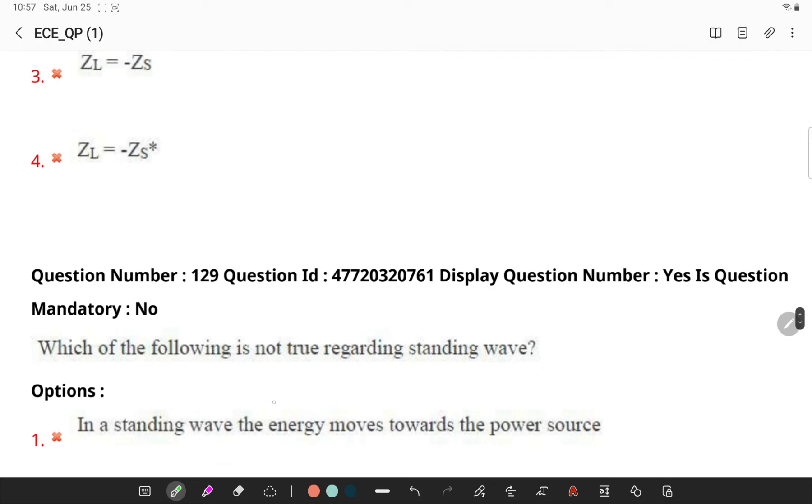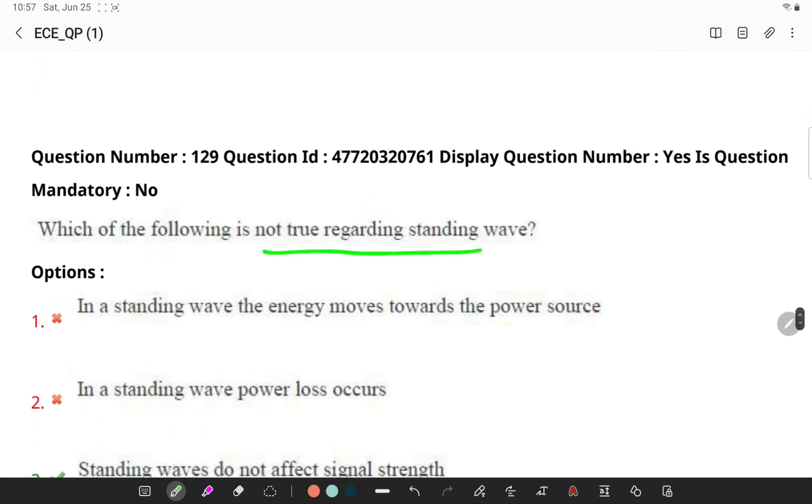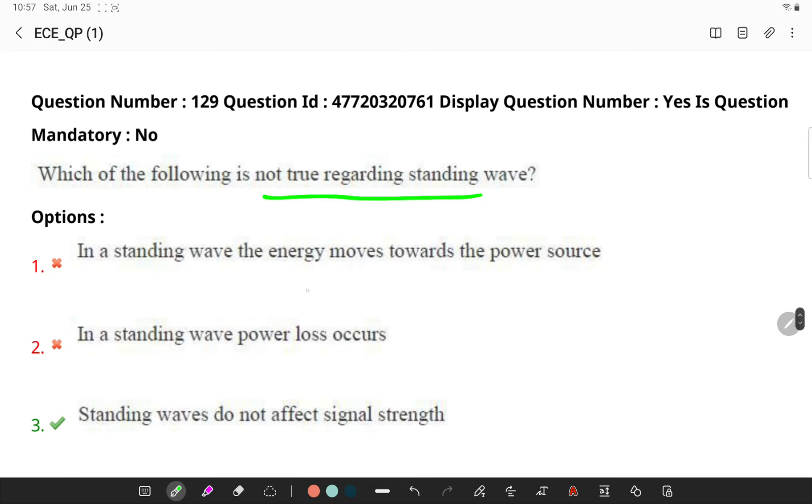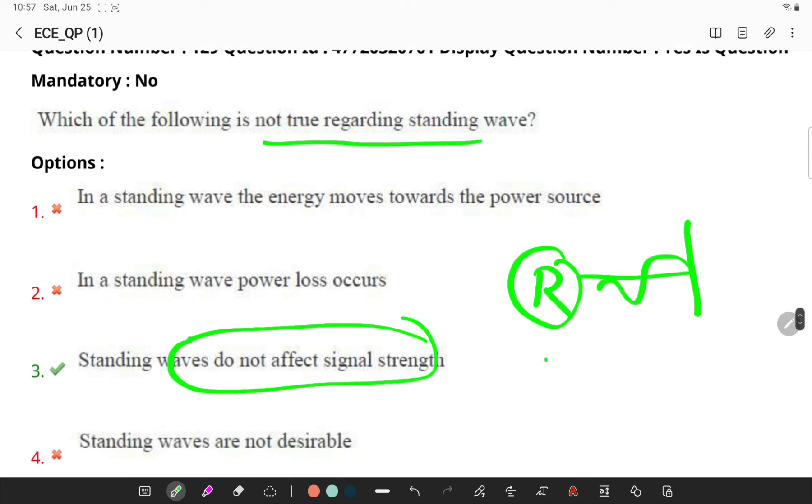Next, which of the following is not true regarding a standing wave? So standing waves are generally not desirable and some of the energy is reflected from the end of the line and actually they move back up to the line. This reflection indicates that the power produced by the generator is not totally absorbed by the load. When there is a power loss, naturally the strength of the power goes down.